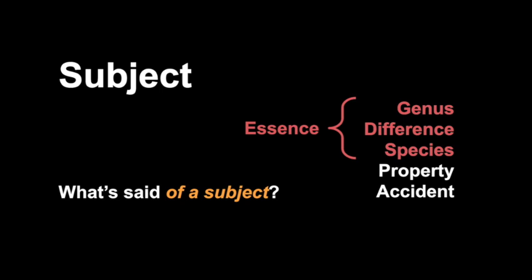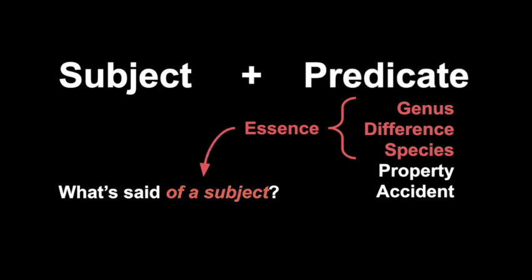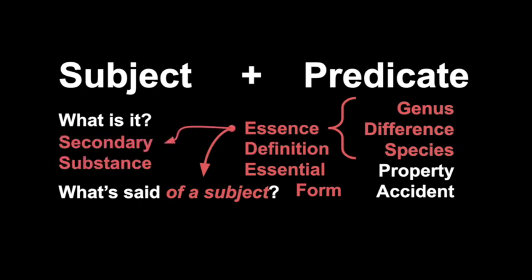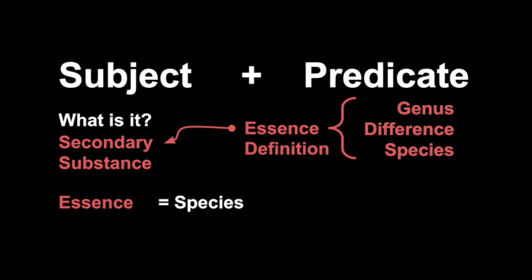The essence is said of a subject. As we said, human is said of Aristotle—human is Aristotle's essence. When we ask 'what is that thing?', the answer is going to be a definition, the essential form of the thing. What is Aristotle? He's a human. What is that animal? It's a dog. What is that plant? It's an orange tree. Essence is also known as secondary substance. Essence equals the species, which equals the genus plus the difference. For example, human is the genus or category animal plus rational.